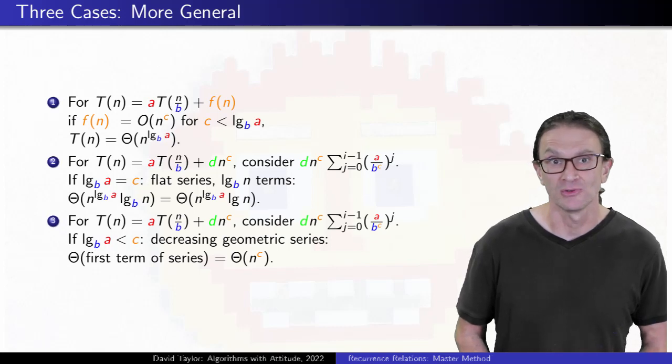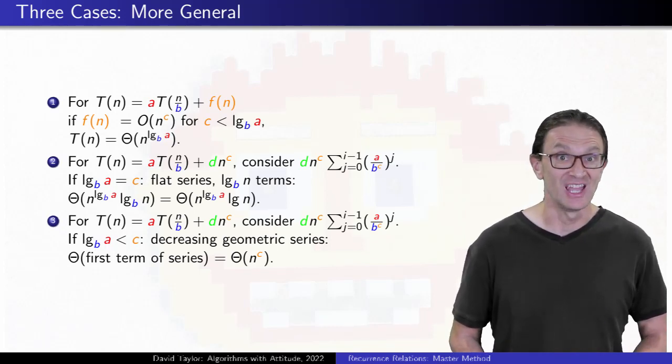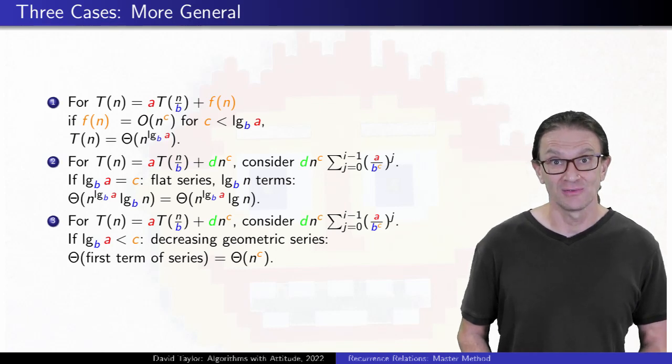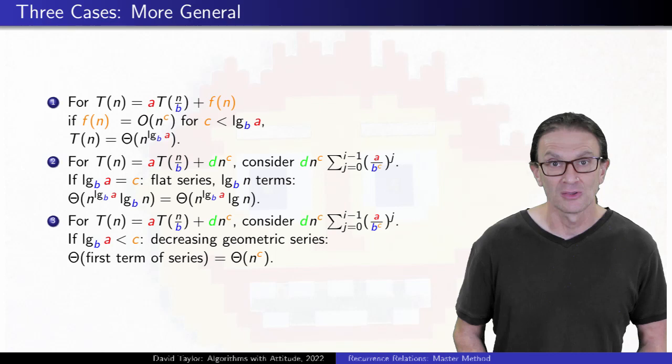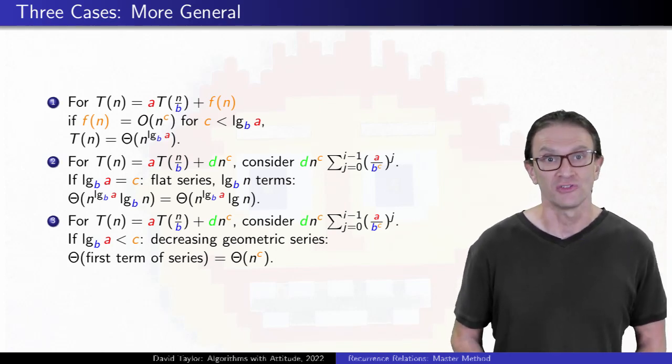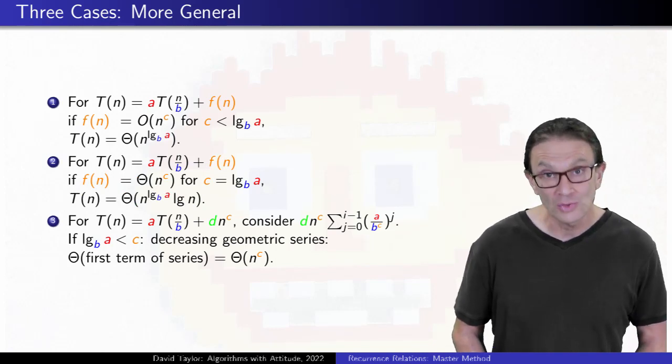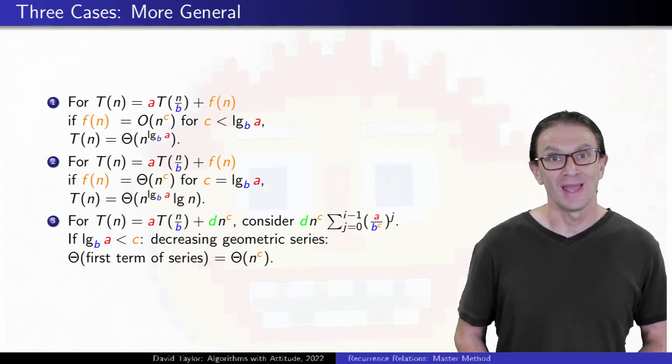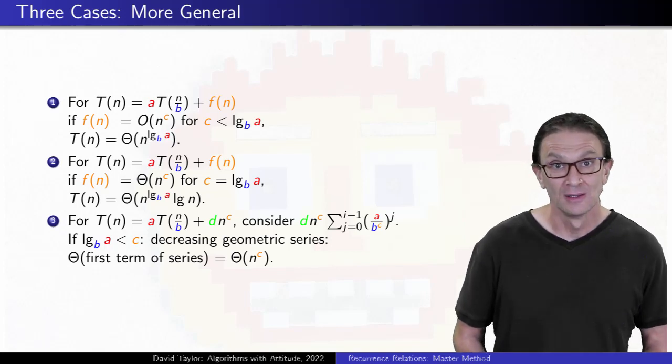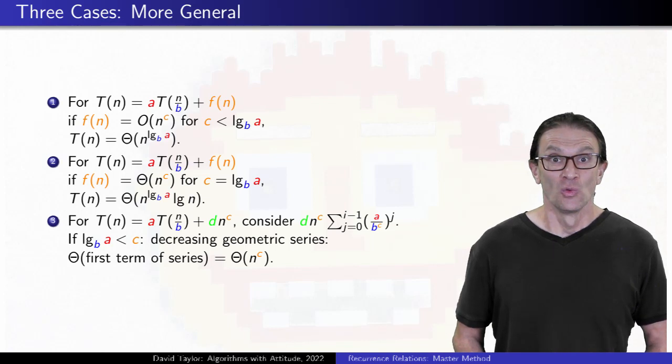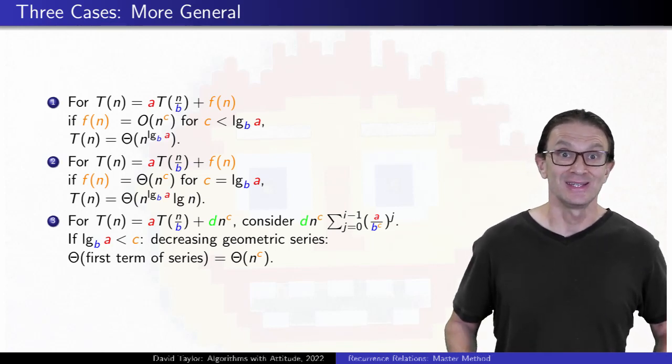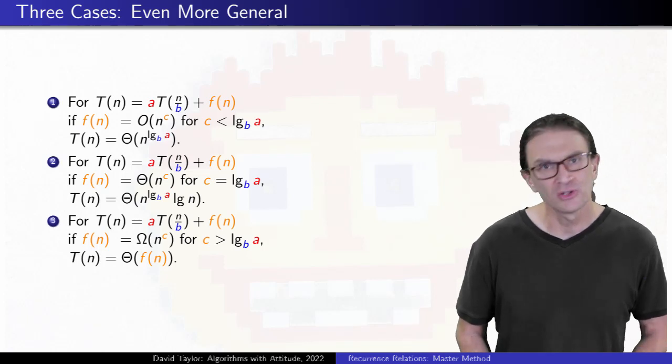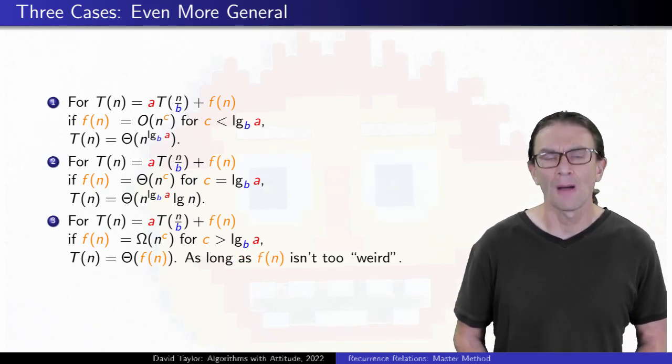The second case was kind of our knife's edge case. We can still mess around with the coefficient, but for all the terms of that underlying series to have the same order of growth, we really expect the driving function itself to have that same order of growth. We can generalize that case, but it doesn't really change that much. Looking at our third case, that was the case when the n to the c term grew so quickly that the first term in the series was the largest, and the resulting decreasing geometric series grows like the first term. We can generalize that too, as long as the driving function isn't too weird. I will come back to define that.